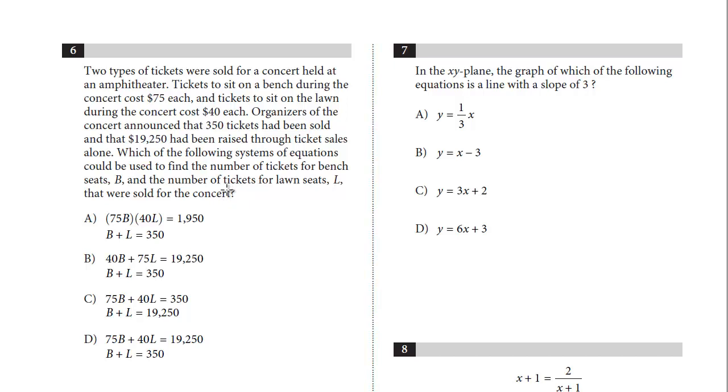And so I always recommend starting with what I call the single variable. So the single variable is the number of tickets sold. So we've got B for bench, we've got L for lawn, and we know the total number of tickets sold, 350. So we know B plus L equals 350 is our first equation. If we look at the choices, A works, B works, this is mixing up the total number of tickets with the revenue, and this works. So we only eliminated one.